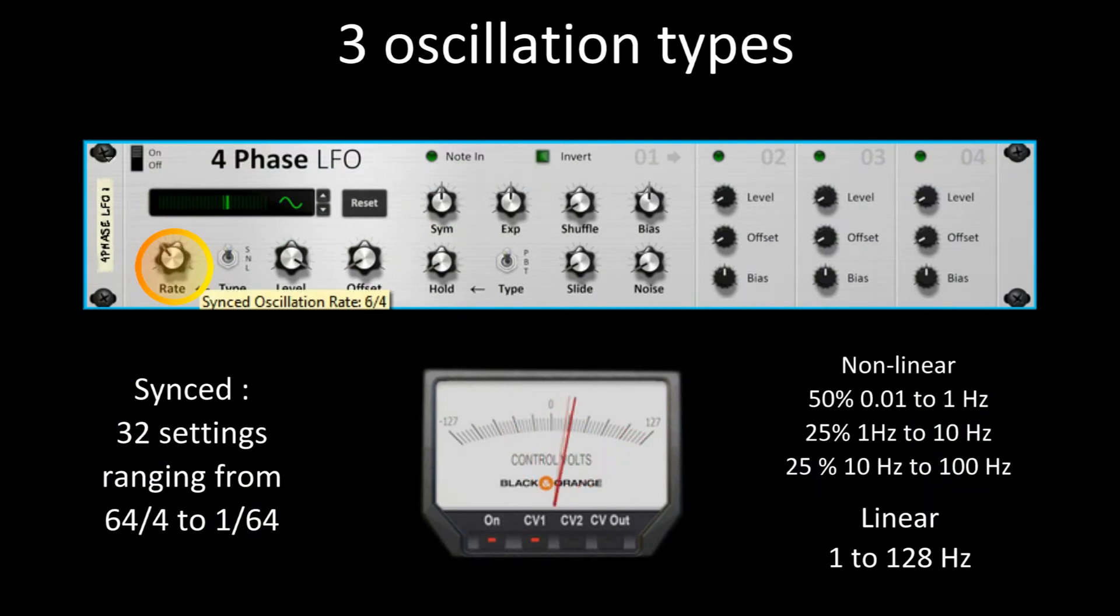Three oscillation types can be used depending on what is needed: the very useful sync to tempo mode, then a nonlinear mode ideal for those extra-slow LFOs, and finally a linear all-purpose mode ranging from 1 to 128 Hertz.